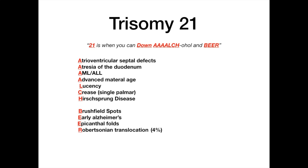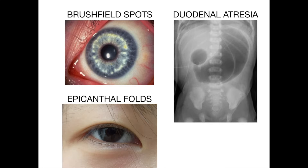Let's look at pictures that should instantly make you think trisomy 21 on your exam. Brushfield spots are those little brightened spots on the eye — if you see that picture, the answer is Down syndrome, trisomy 21. Duodenal atresia — don't forget the double bubble sign on x-ray. The question could be about GI physiology or genetics such as trisomy 21. The epicanthal fold is the skin adjacent to the top of the eyelid that covers the duct at the medial portion of the eye; when prominent, have increased suspicion for trisomy 21.